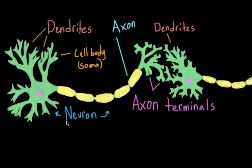Here we have a neuron. Neurons receive messages through their dendrites, which are these branching structures here. Then that electrical signal is sent down the axon to the axon terminals at the end. Here it meets up with the dendrites of the next neuron down the line. But these cells aren't really touching, and the electrical signal — the action potential — can't actually jump between these cells.